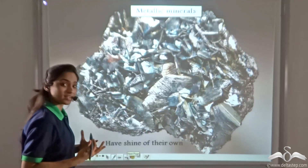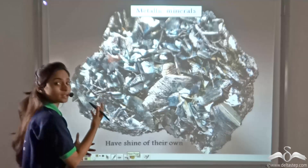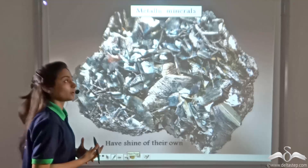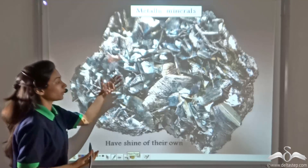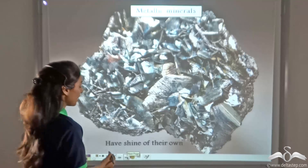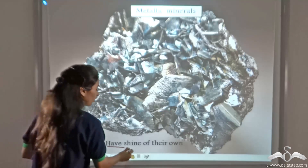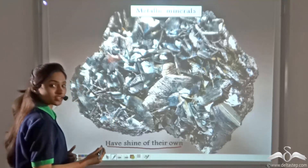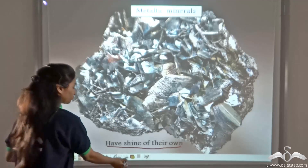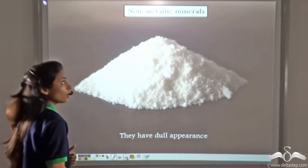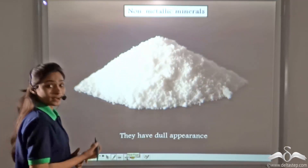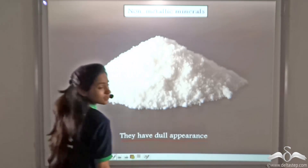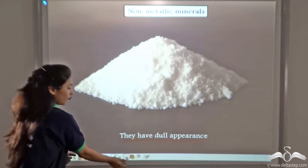Let us study some differences between metallic minerals and non-metallic minerals. Metallic minerals like hematite have a shine of their own — metallic minerals have their own lustre. Non-metallic minerals, on the other hand, have a dull appearance.